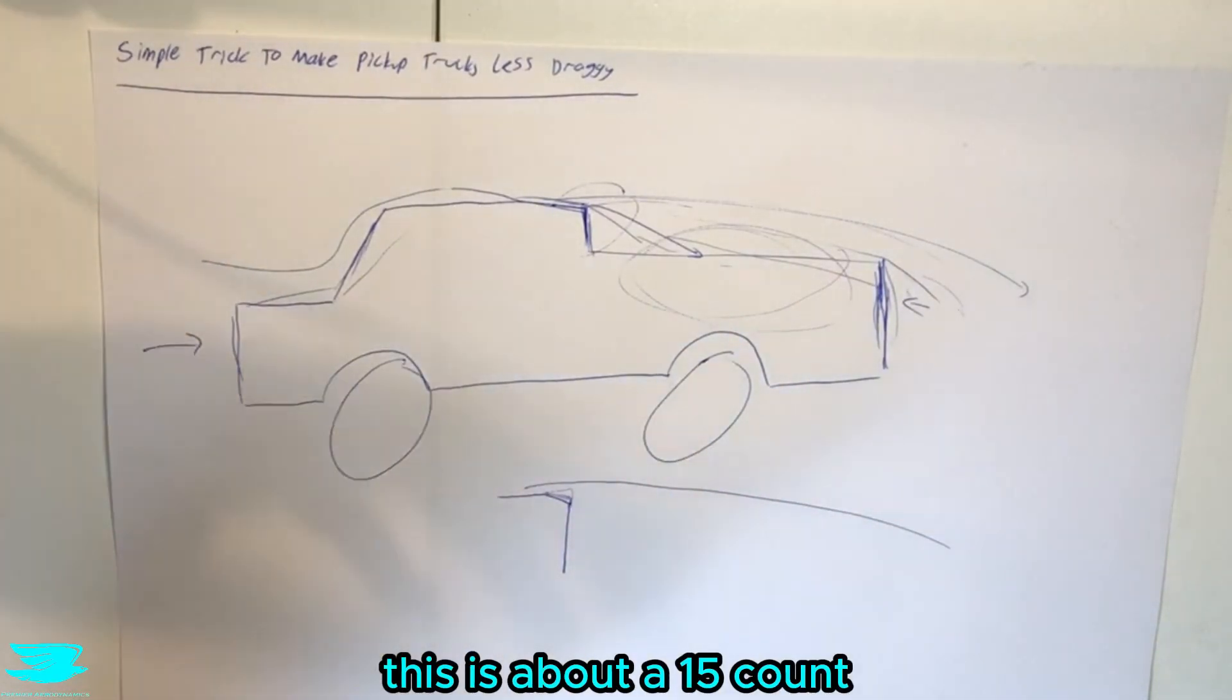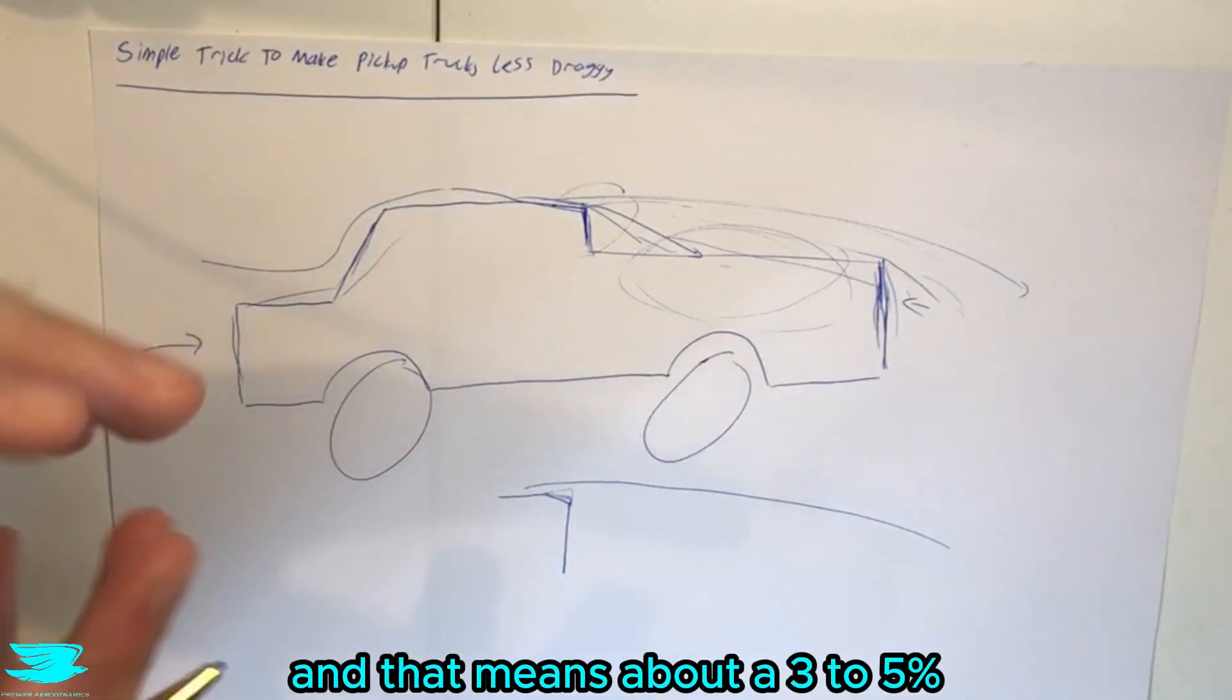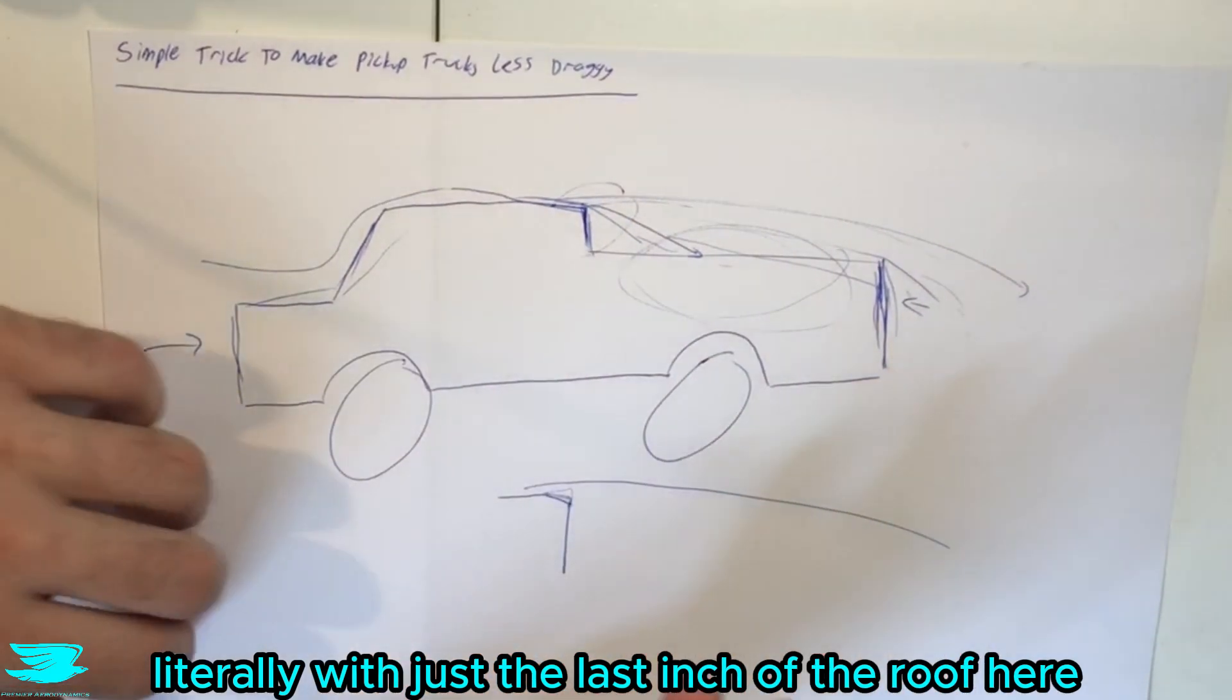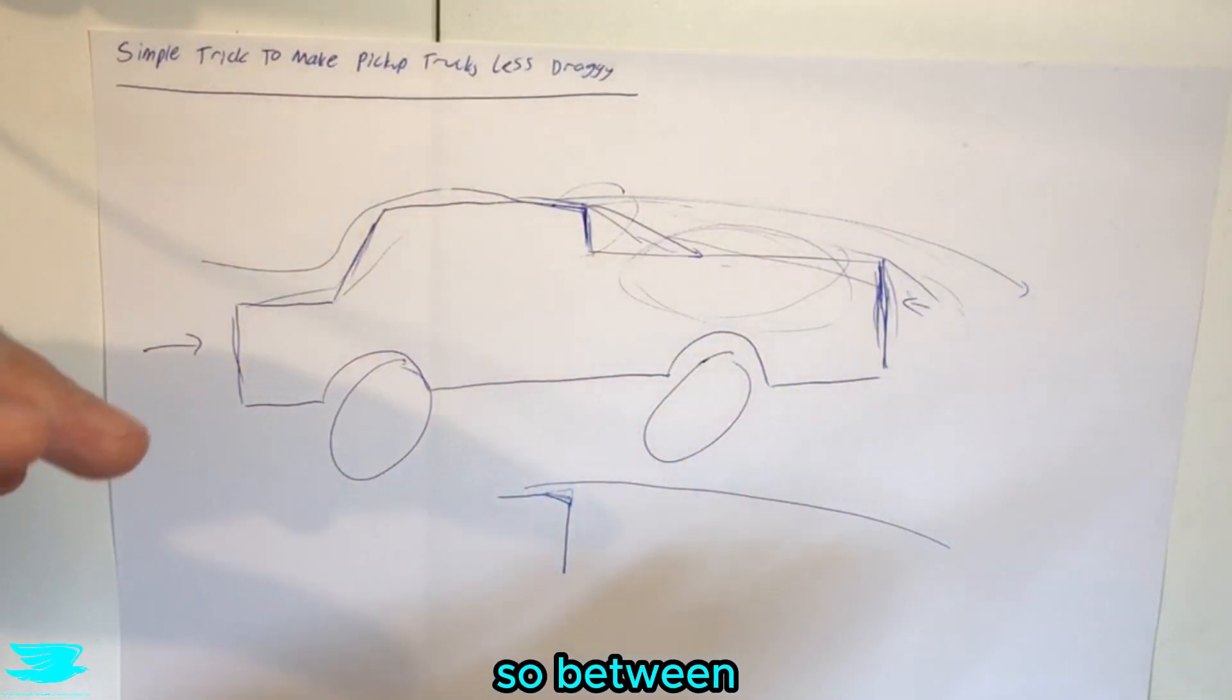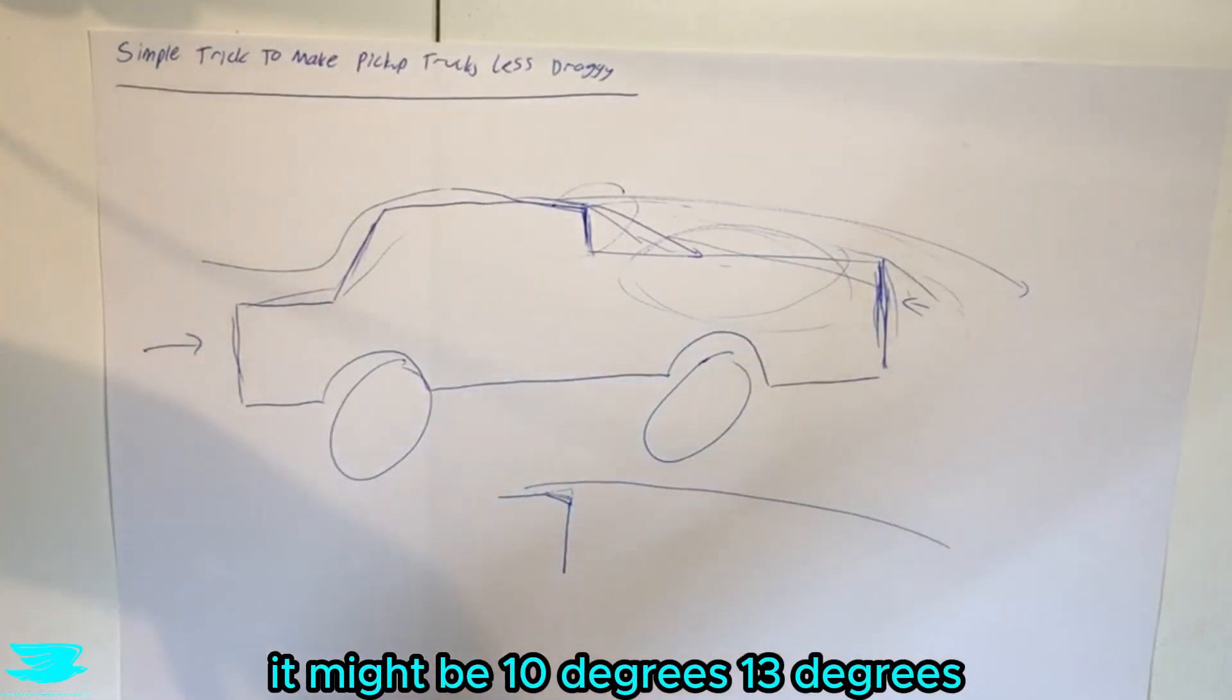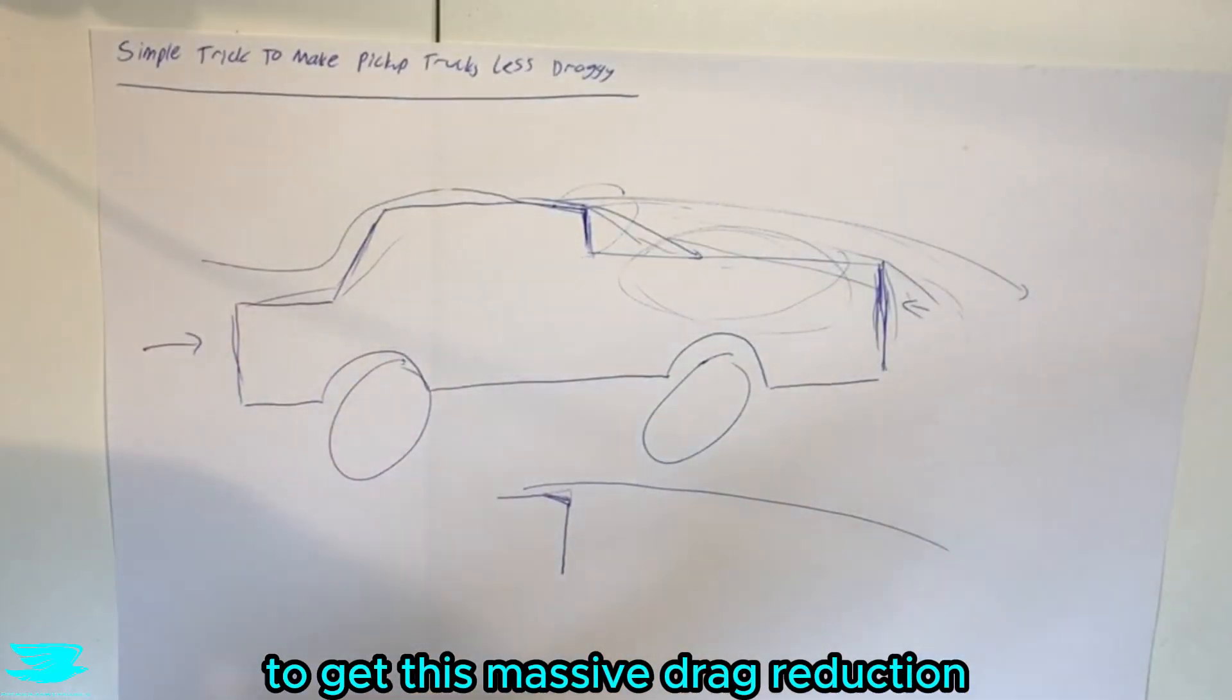And as I said this is about a 15 count reduction that they found for a regular pickup truck and that means about a three to five percent reduction in drag literally with just the last inch of the roof here changing direction by changing angle by just a few degrees so between zero and 20 degrees is the general range that you'll find and depending on the truck it might be 10 degrees or 13 degrees that you need to put this out to get this massive drag reduction.